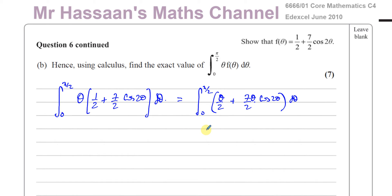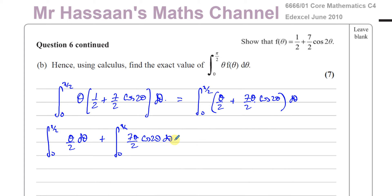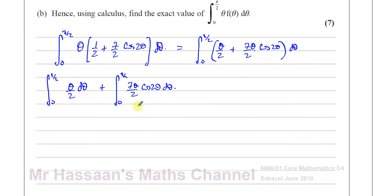So I'll separate this into the integral between 0 and π/2 of θ/2 with respect to θ, plus the integral between 0 and π/2 of 7θ/2 cosine 2θ with respect to θ. The first integral is straightforward. I'll leave the limits and focus on the second one first — pulling the factor 7/2 outside, leaving the integral of θ cosine 2θ with respect to θ.